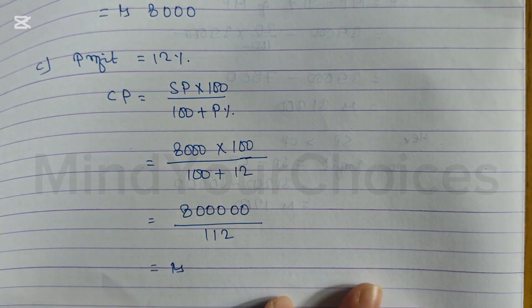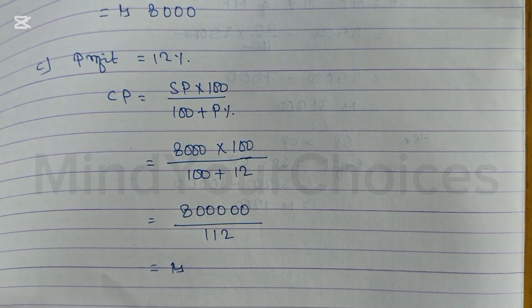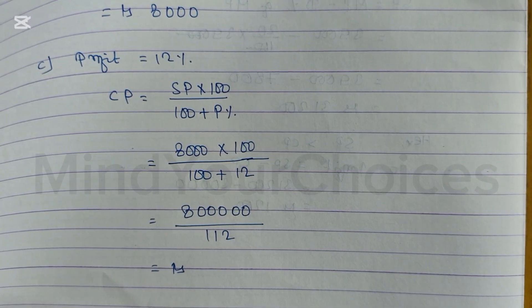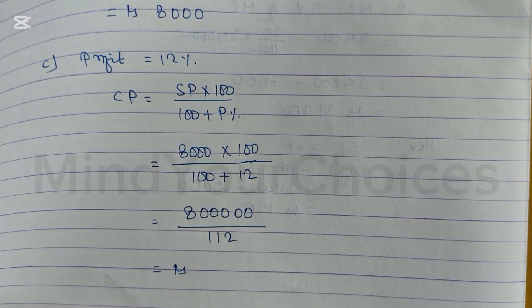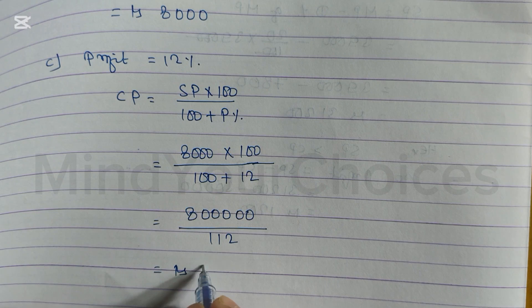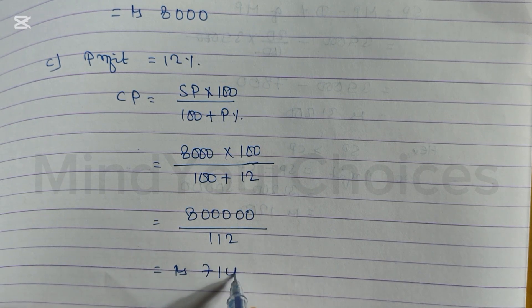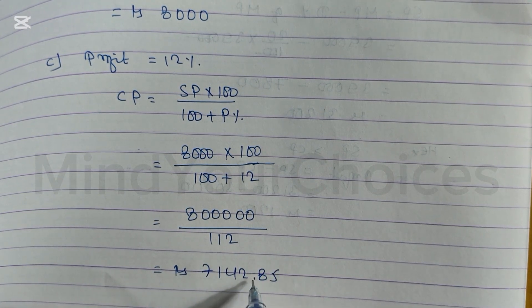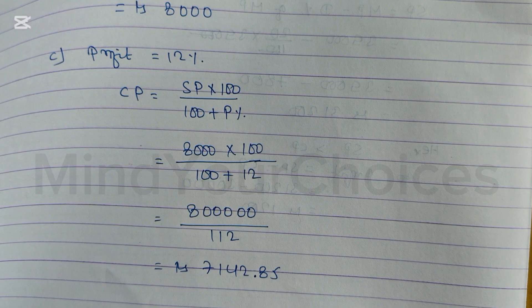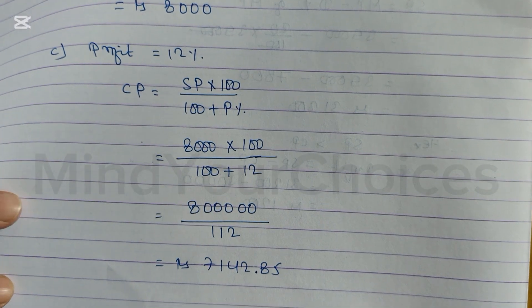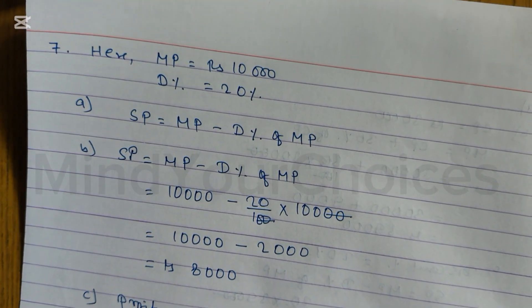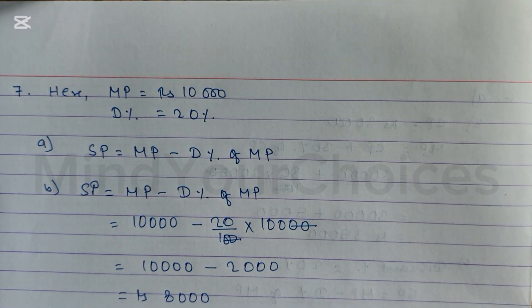800,000 or 8 lakhs: 8, 1, 2, 3, 4, 5, 0, divided by 112, and we get 7,142.85. So 7,142.85 is your cost price. Hope you understand this question number 7.